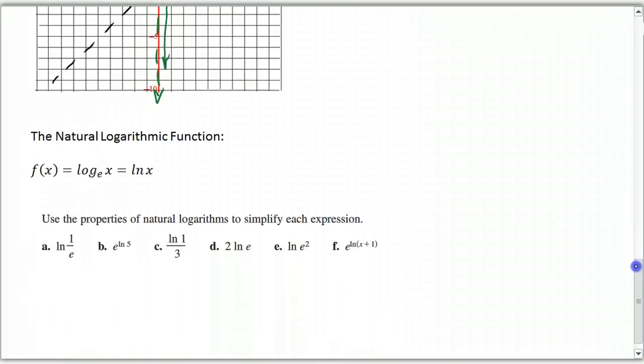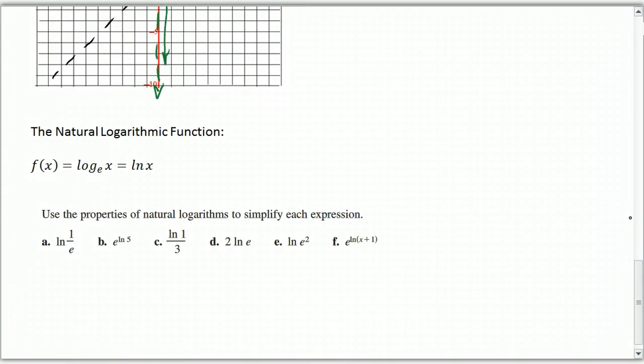Okay, so there's a special kind of logarithmic function called the natural logarithmic function. And we write it LN of X. And there's nothing mysterious about it. It just says that the base is the number E. And E is that irrational number that's, you know, approximately 2.718, etc.